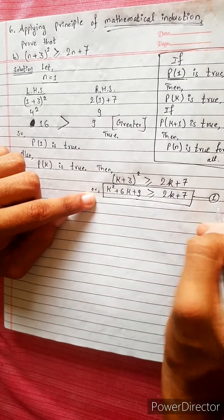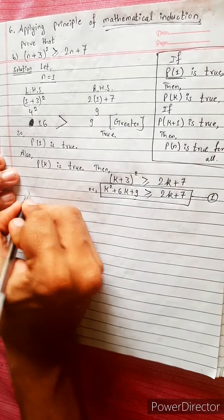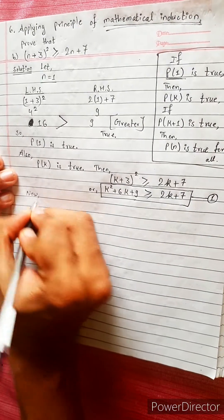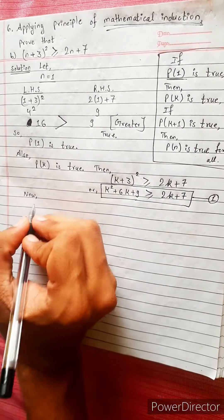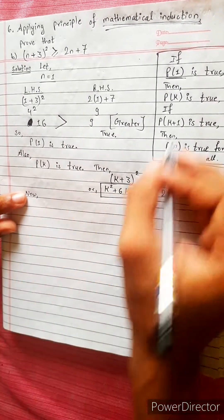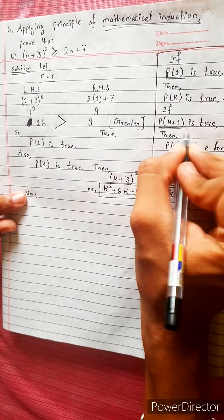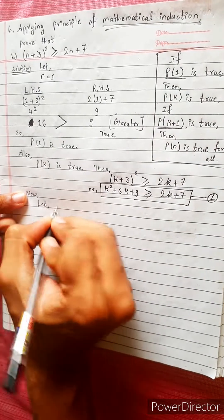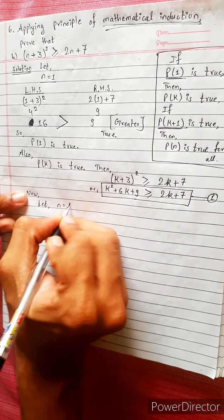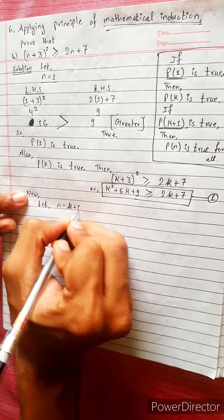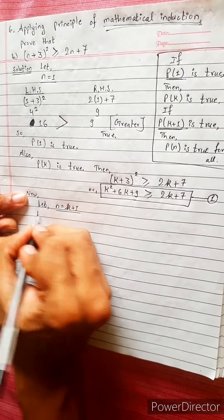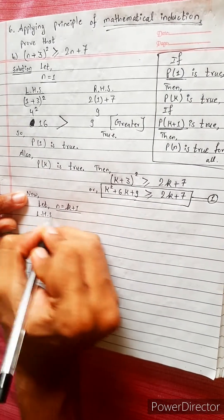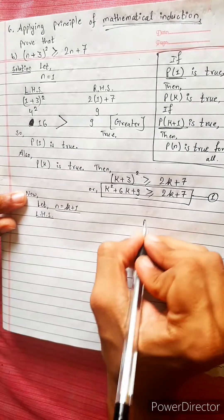Equation one — noting one error. Now, let n equals k plus 1. Bk plus 1 — solving LHS and solving RHS.